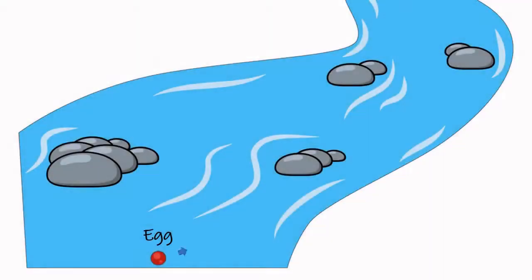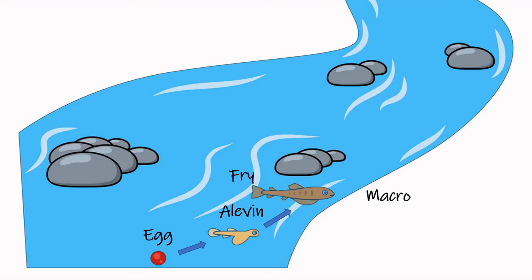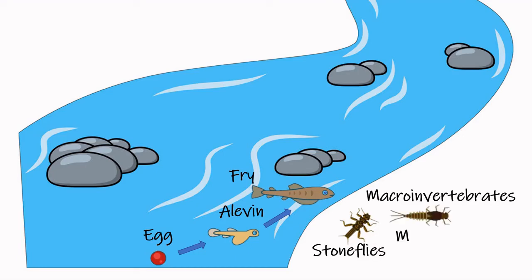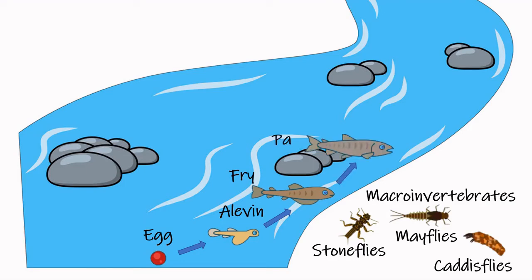As the yolk sac disappears, the alevin grows into a fry. Now it will need to eat aquatic insects or macroinvertebrates like stoneflies, mayflies, and caddisflies. If there is plenty to eat and the water temperature is good, the fry will quickly grow into a parr.